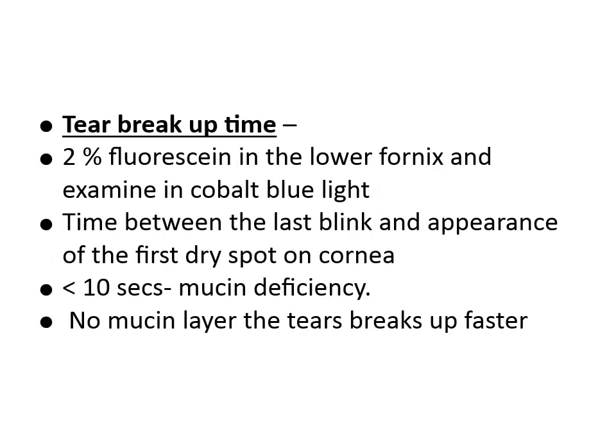The next test is tear breakup time (TBUT). You take a 2% fluorescein dye, instill it in the lower fornix, and examine it under cobalt blue light. The patient is asked to blink several times. TBUT is the time interval between the last blink and the appearance of the first dry spot on the cornea. If there is no mucin layer, the tear tends to break up faster. If this tear breakup time is less than 10 seconds, it indicates mucin deficiency.